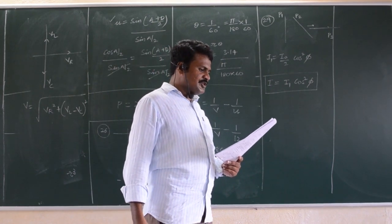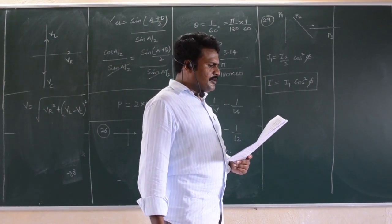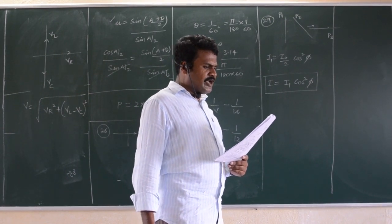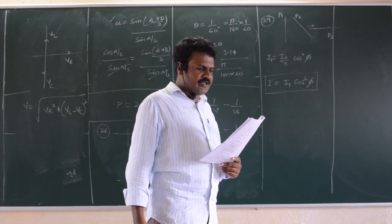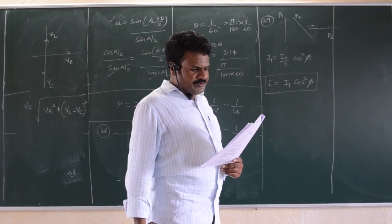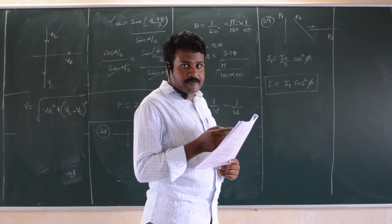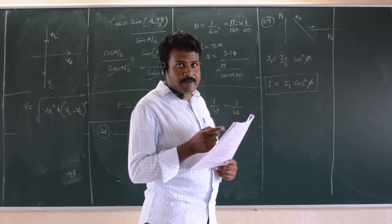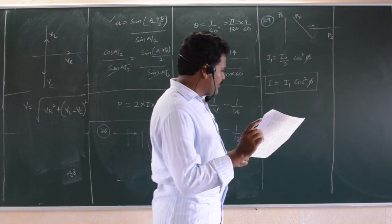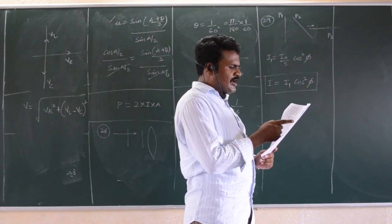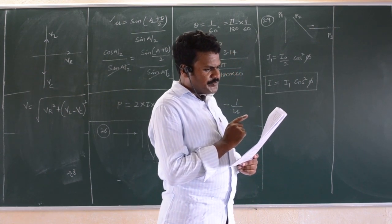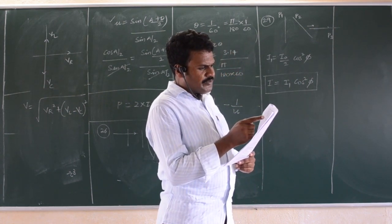Question number 30: the following graph represents the variation of photocurrent with anode potential for metal surfaces I1, I2, and I3. From the graph, you can observe that frequency 1 is equal to frequency 2 for I1 and I2.